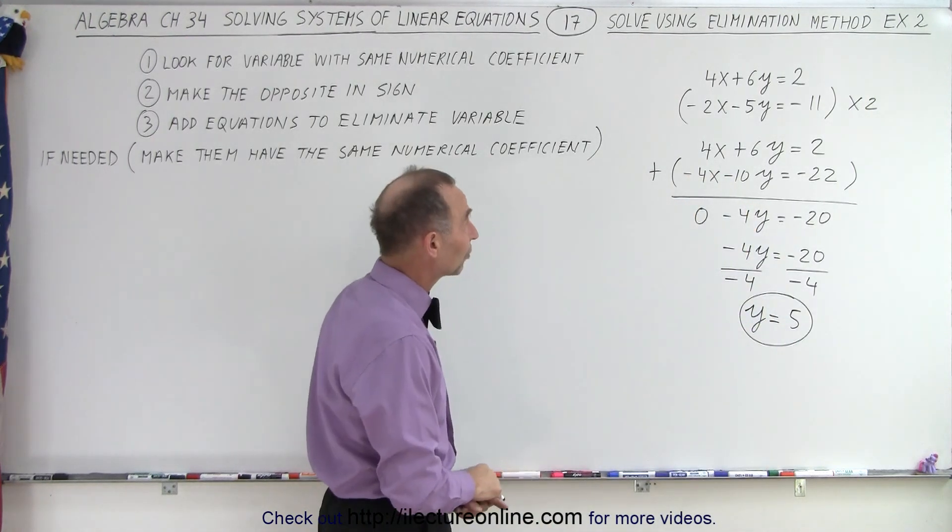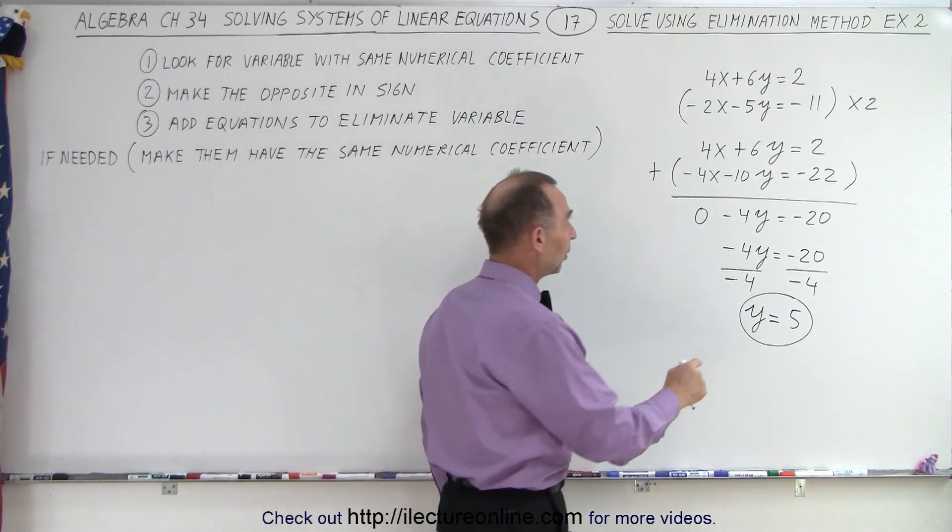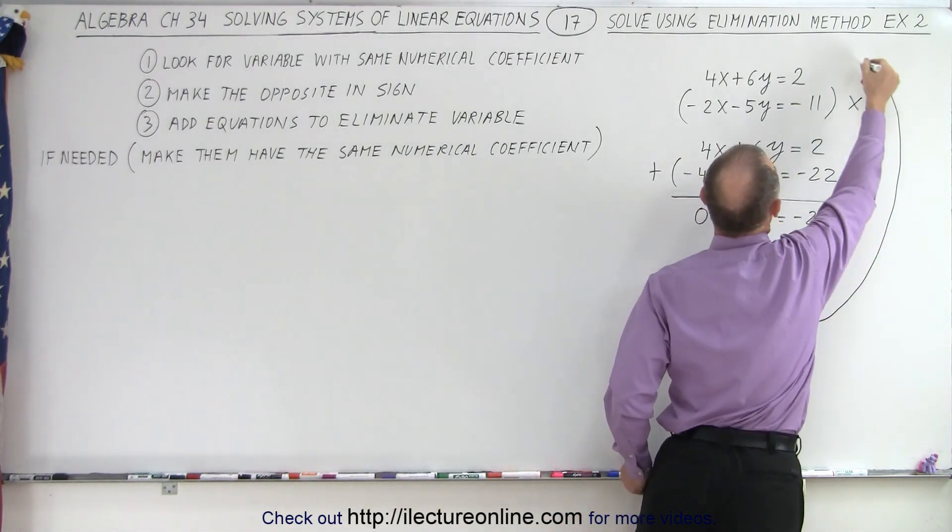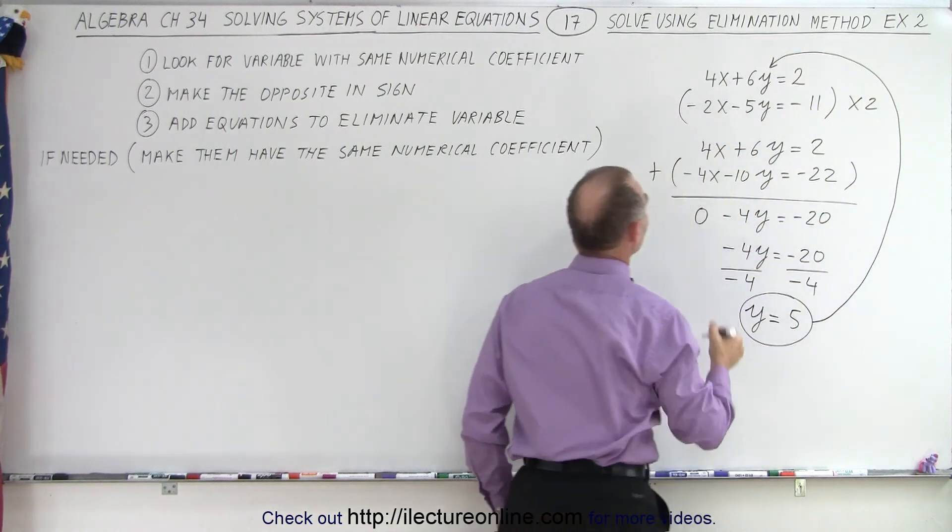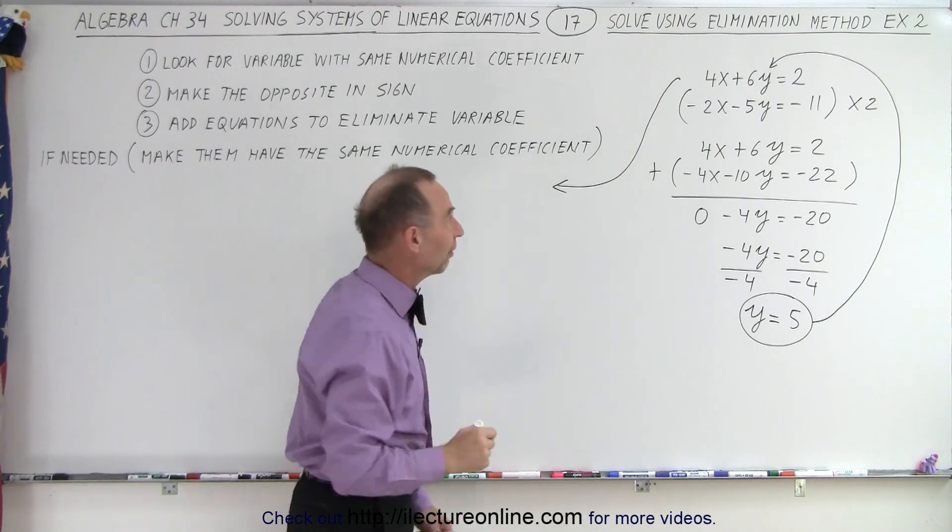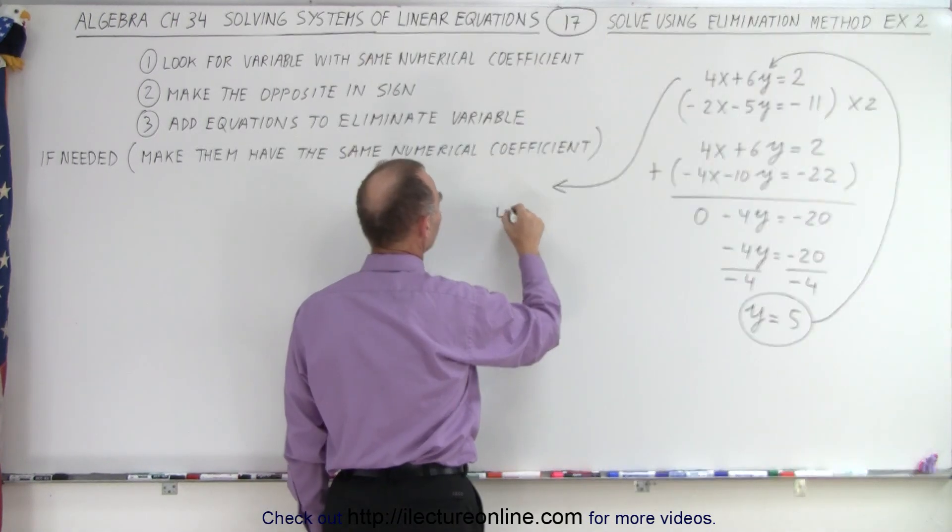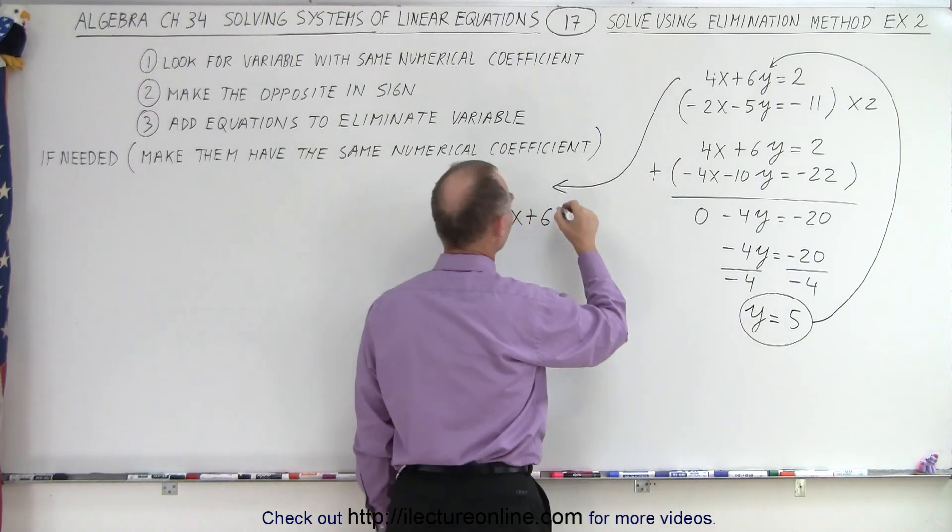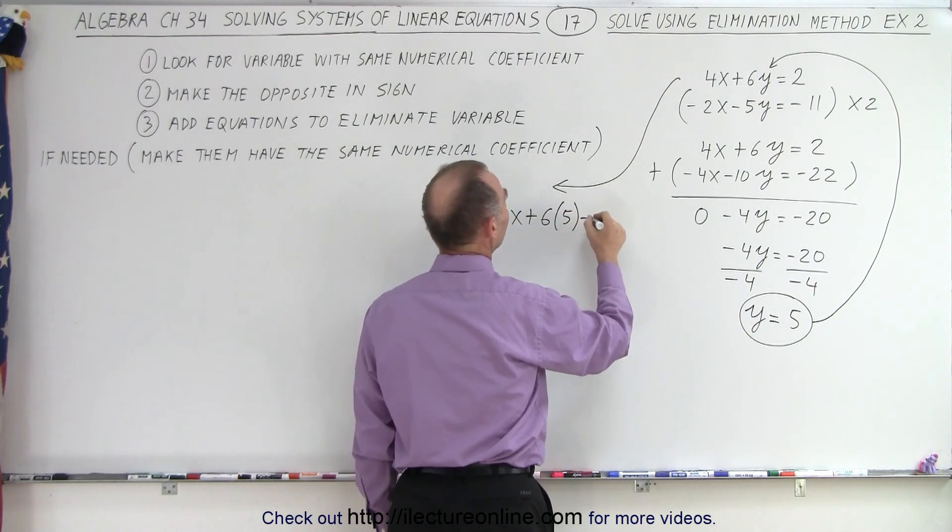Now I have to find X. So what I'm going to do is I'm going to plug this into one of my two equations, maybe this one right here, and now I can solve for the second variable. So I end up with 4X plus 6 times Y, which is 5, is equal to 2.